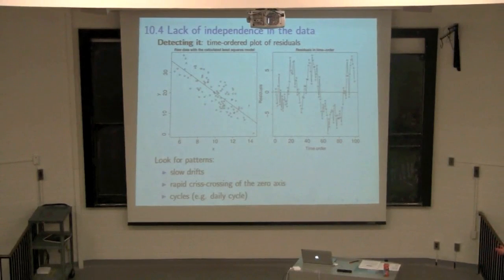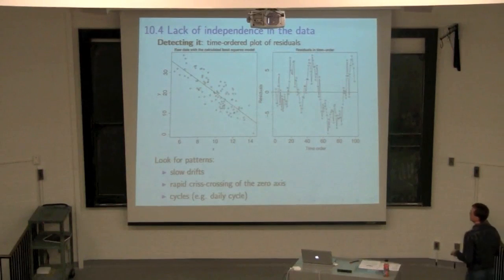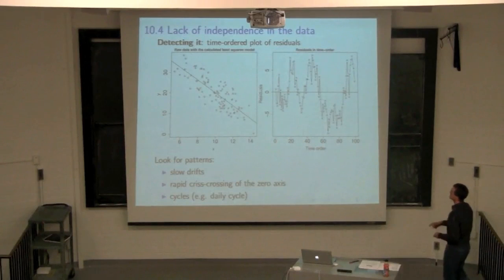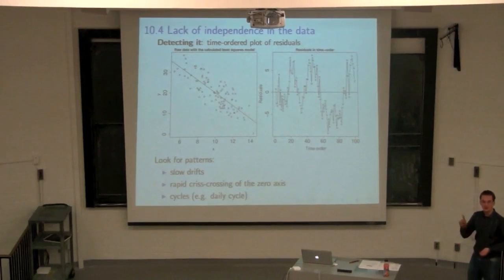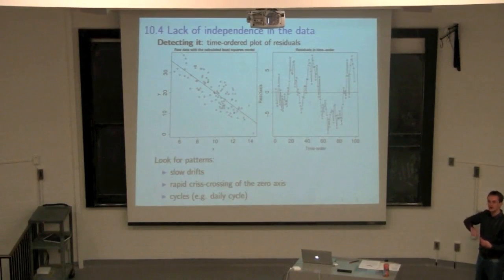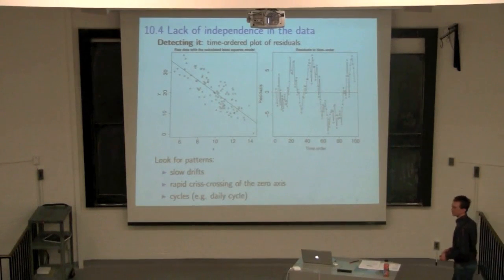The easiest way to detect autocorrelation is to plot your residuals in time order. Because the human eye is good at picking up patterns, this is often the best way. Look for slow-moving drifts, rapid crisscrossing of the zero axis, up-and-down above-and-below movements, or any cyclical behavior — these immediately indicate an autocorrelation problem.